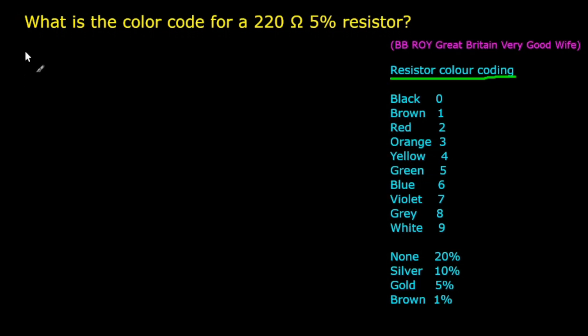First, we look at the 4 band method. The 4 band color code is the most common variation. These types of resistors have two bands for the resistance value, one multiplier, and one tolerance band.